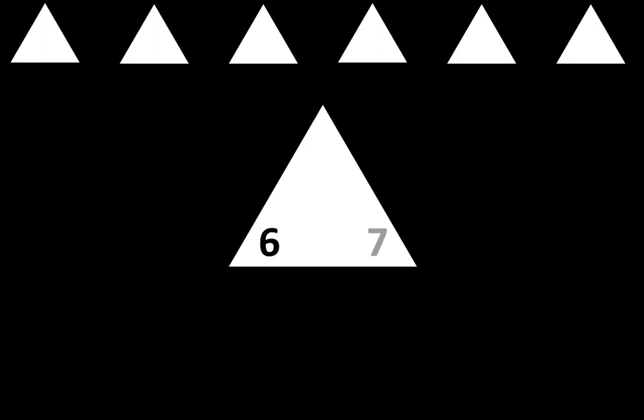On your paper, you have six rows of triangles. We'll fill each triangle in with two factors and a product. Let's begin with the top row. I'll read each one to you so you can copy it onto your paper, and show each one in a larger triangle. The first one is 6 times 7 is equal to 42.